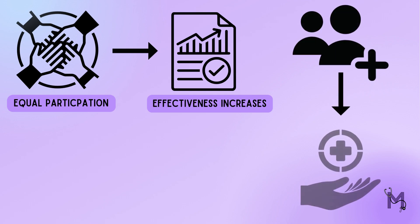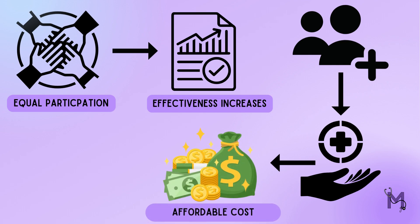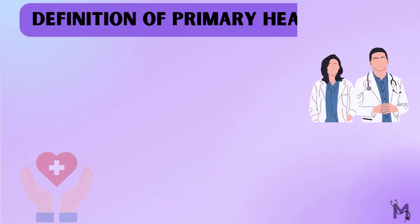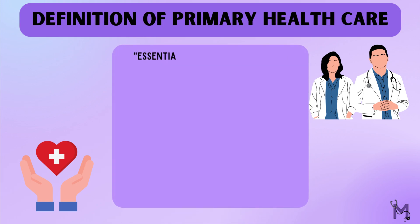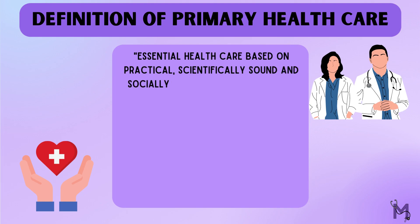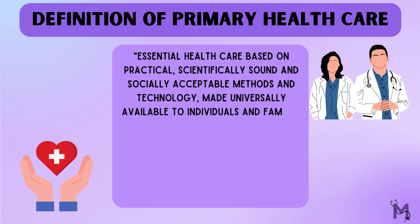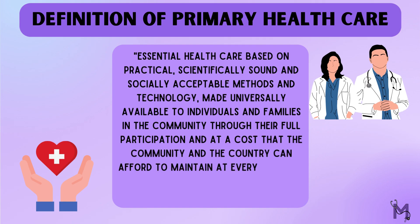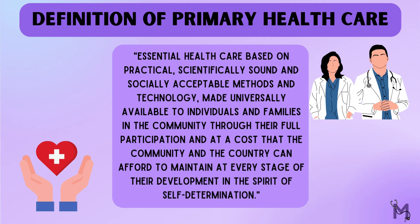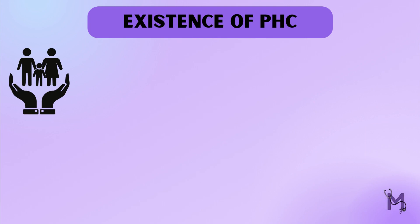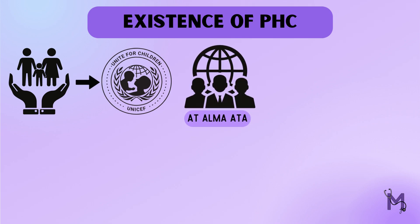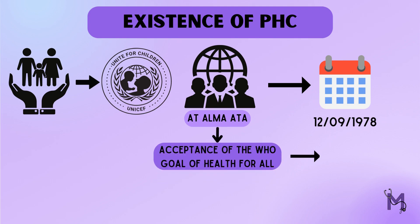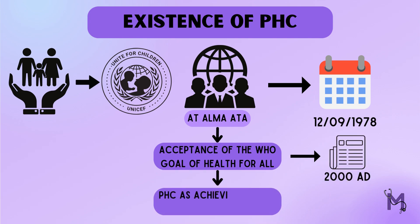To ensure more people avail these health care services, they must be made available at a cost which both the community and the country can afford. Primary health care is defined as essential health care based on practical, scientifically sound and socially acceptable methods and technology, made universally available to individuals and families in the community through their full participation, and at a cost the community and country can afford to maintain at every stage of their development in the spirit of self-determination. This concept came into existence following the joint WHO-UNICEF international conference at Alma Ata on the 12th of September 1978, which called for health for all by 2000 AD and proclaimed primary health care as the way of achieving it.